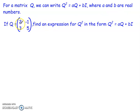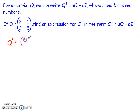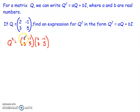Let Q equal the matrix [2, −1; 3, 5], and we want to find an expression for Q² in the form aQ + bI. Q² means multiplying [2, −1; 3, 5] by itself. Because it's squared, normal matrix multiplication rules apply — we still use rows and columns.